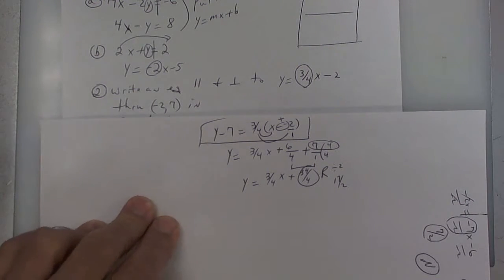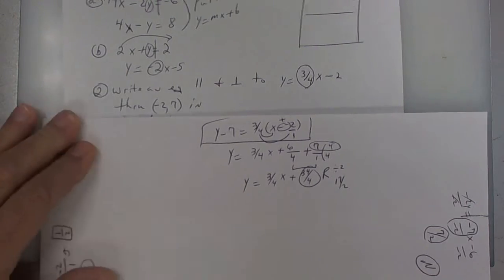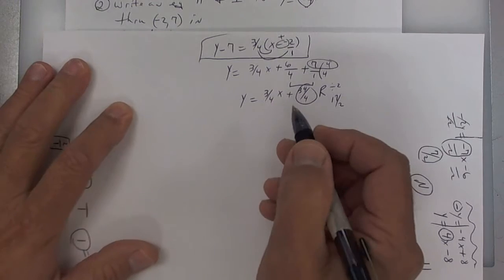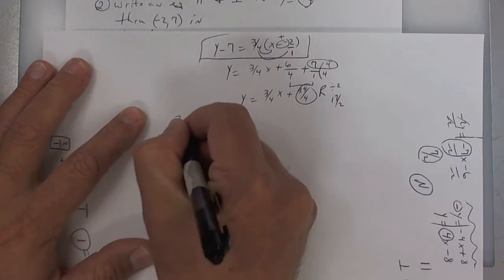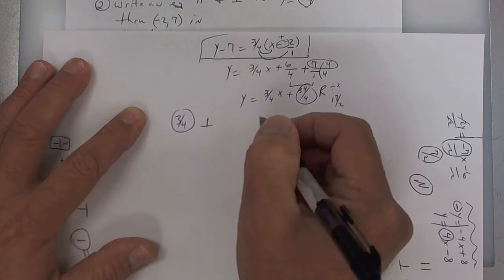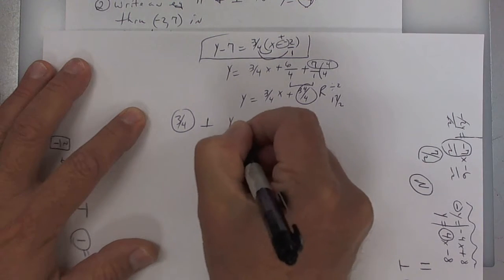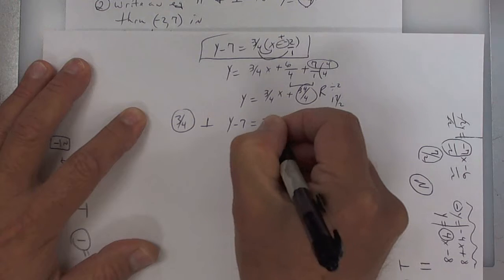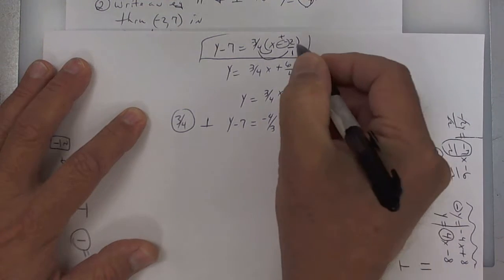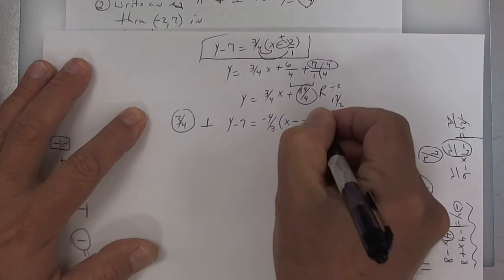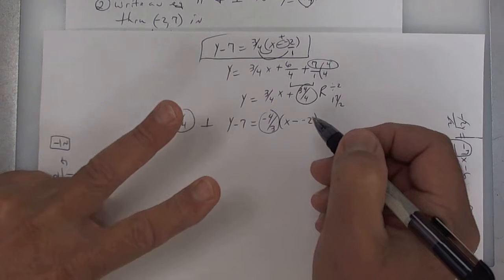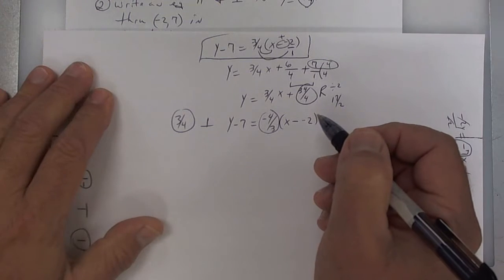It says parallel and perpendicular — so that first one is parallel. To do perpendicular, you're going to take your slope, which is 3 over 4, and flip it and change it. So to be perpendicular, you use y minus 7 equals negative 4 over 3, and then x minus negative 2. Everything's the same except your slope — you've got to do two things: flip it and change it.